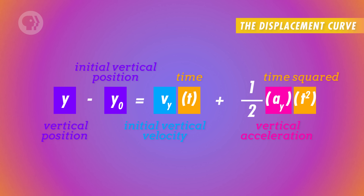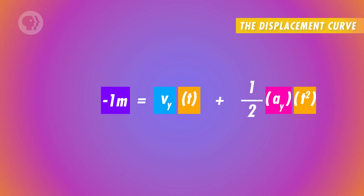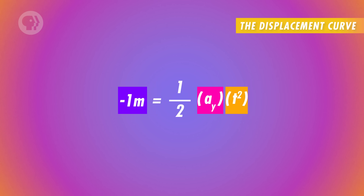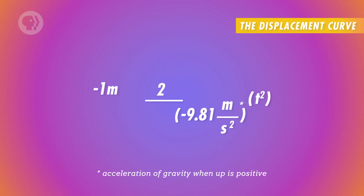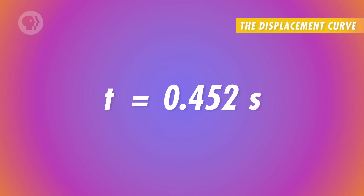In this case, the one we want is what we've been calling the displacement curve equation. We just add Y subscripts to velocity and acceleration, since we're specifically talking about those qualities in the vertical direction. The ball's displacement is minus one meter, there's no starting vertical velocity since the machine is pointing sideways, and the vertical acceleration is just the force of gravity. Now all we have to do is solve for time t, and we learn that the ball took 0.452 seconds to hit the ground. Its horizontal motion didn't affect its vertical motion in any way.